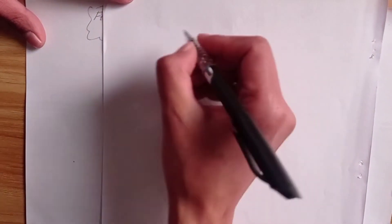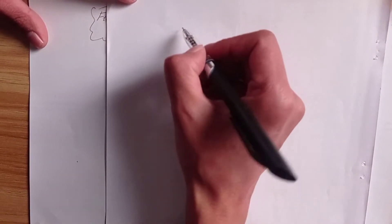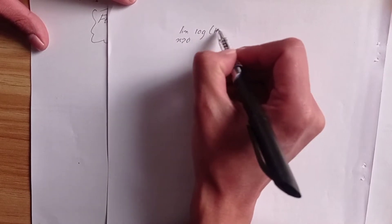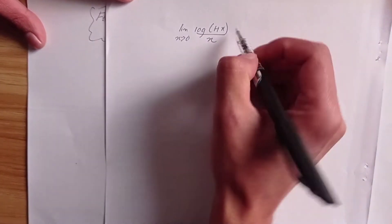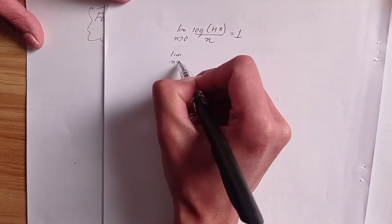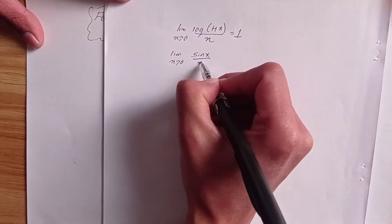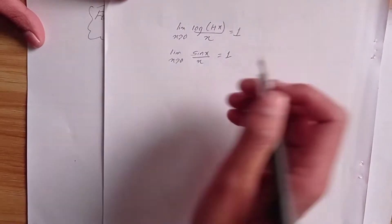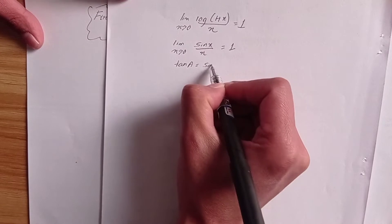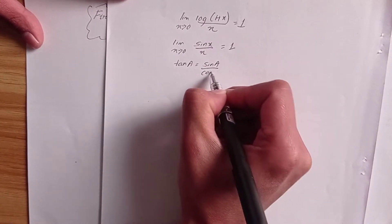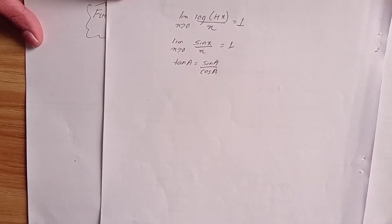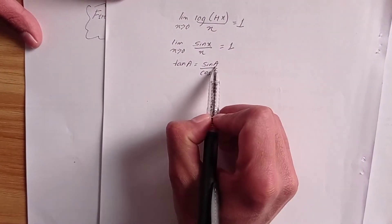First of all, I will use the standard limit: limit x tends to 0, log(1 + x) / x is equal to 1. Also, limit x tends to 0, sin(x) / x is equal to 1. And I am going to use the trigonometric identity tan(a) = sin(a) / cos(a).